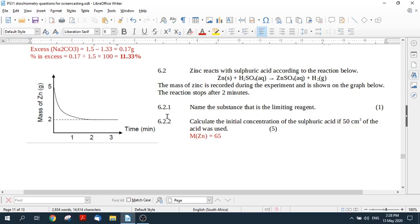Okay so what is limiting here? The only thing that can be limiting here is the sulfuric acid. Okay calculate the initial concentration of the sulfuric acid if 50 cubic centimeters of the acid was used. So we're going to have to find the number of moles of sulfuric acid in order to find the concentration.